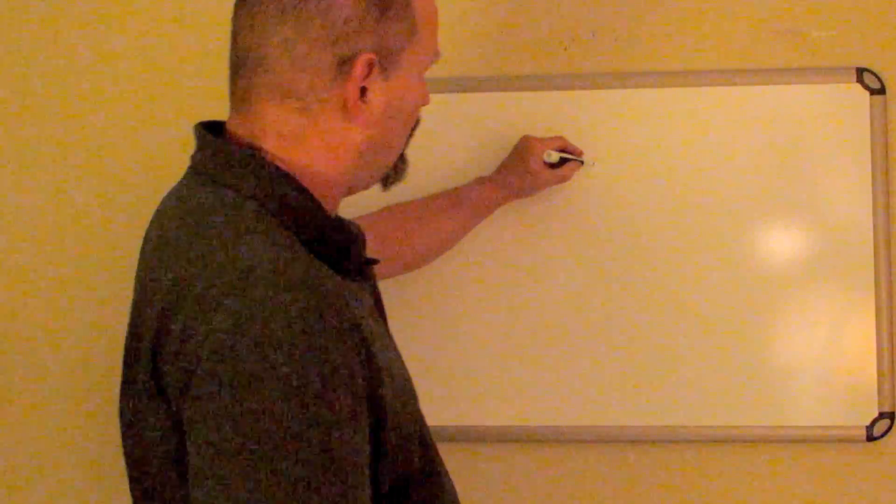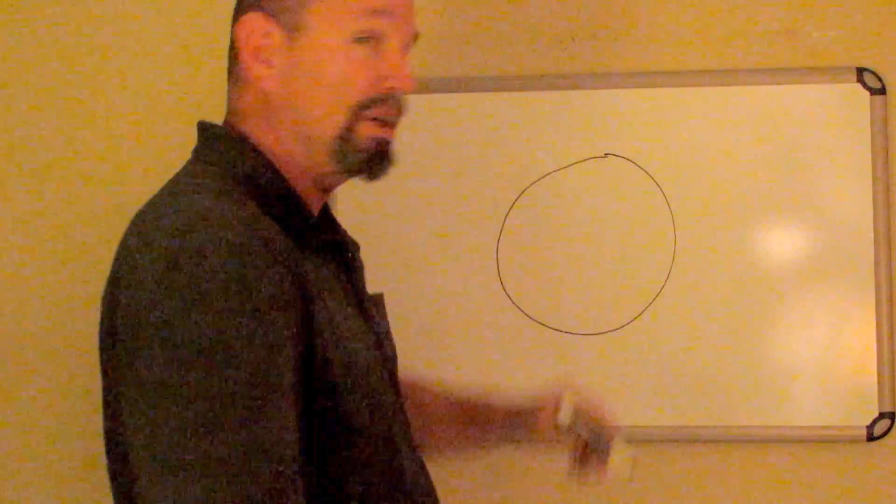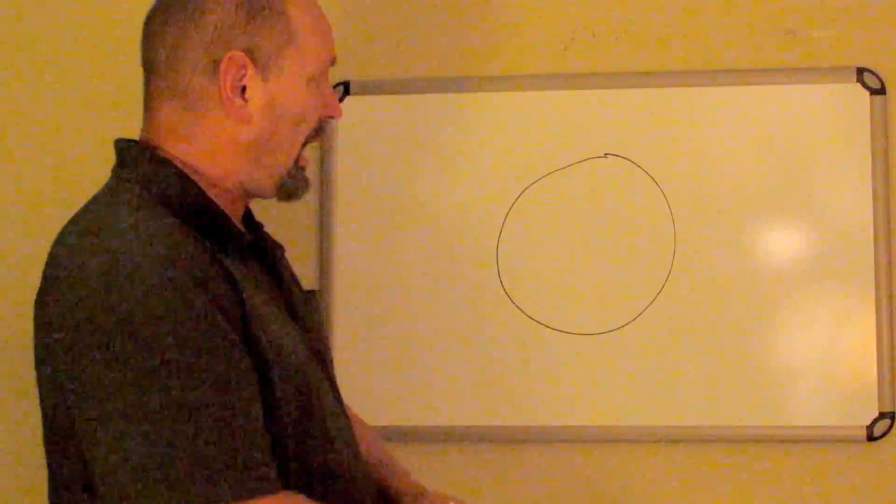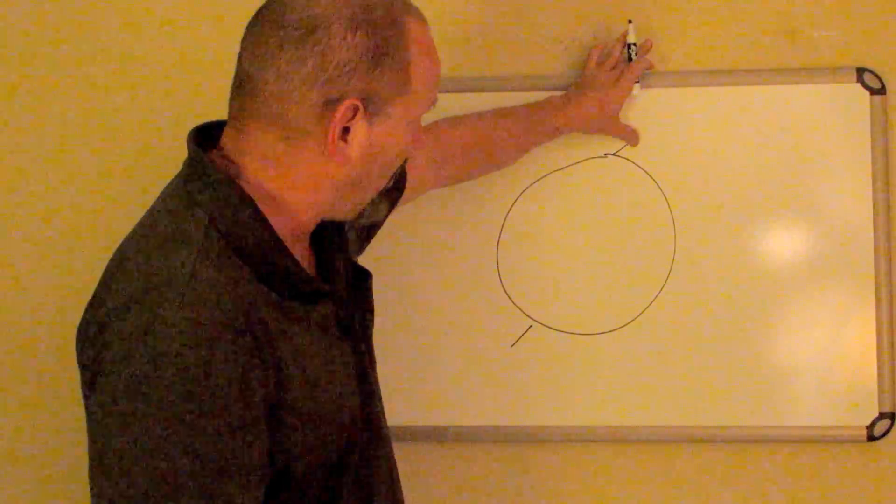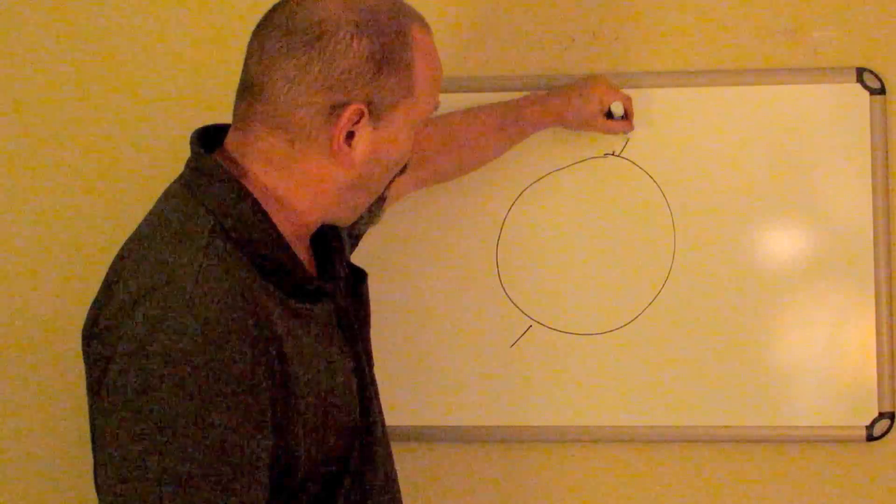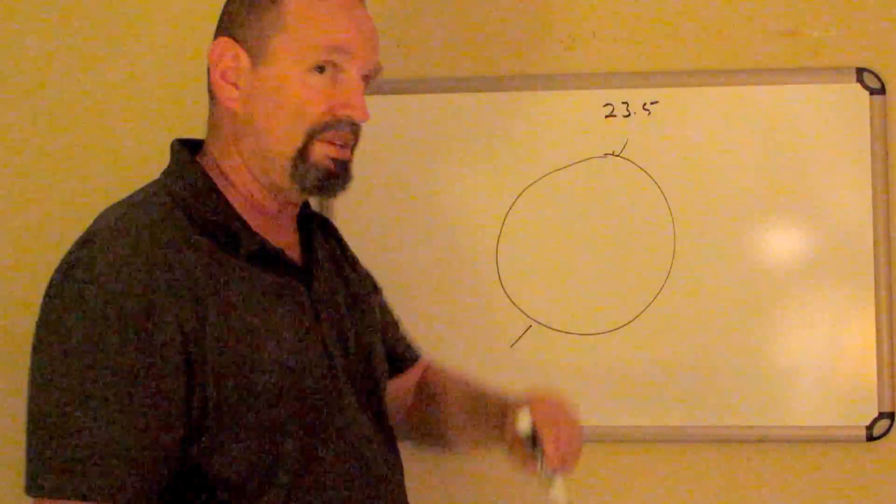First thing, this is our Earth. Our Earth has an axis. The axis is about 23.5 degrees, 23 and a half degrees.